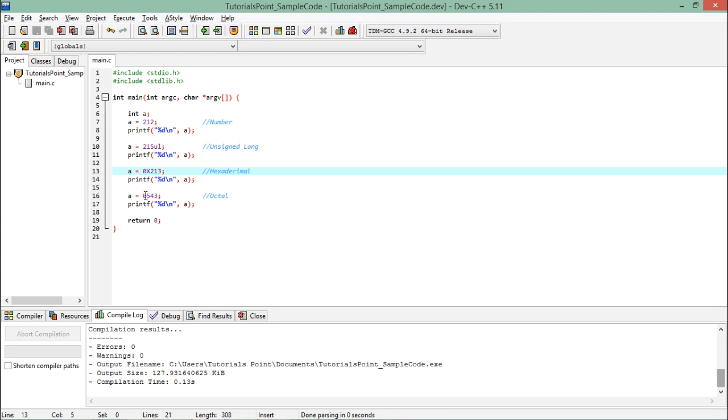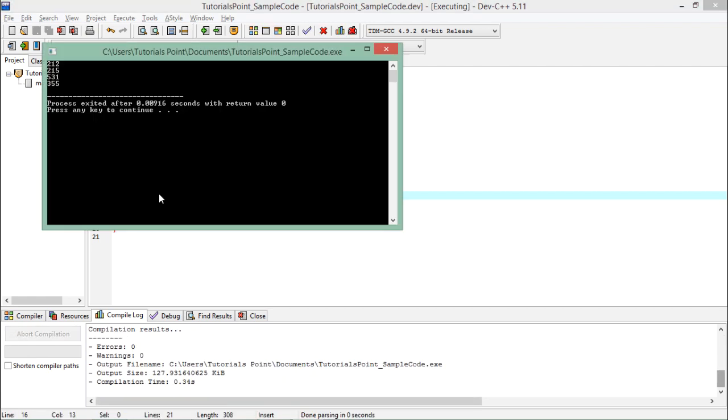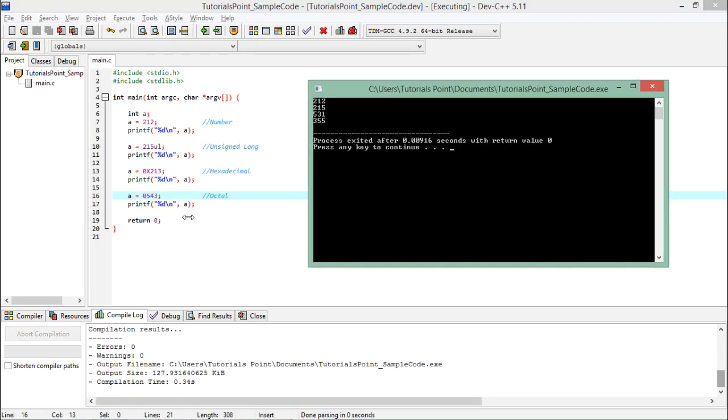Now you can generally, as you do, simply convert these values of hexadecimal and octal type to binary digits. And when you will execute that, you will just get the same outputs—like here this is 355, this is 531, this is 215 unsigned long, and this one is 212.